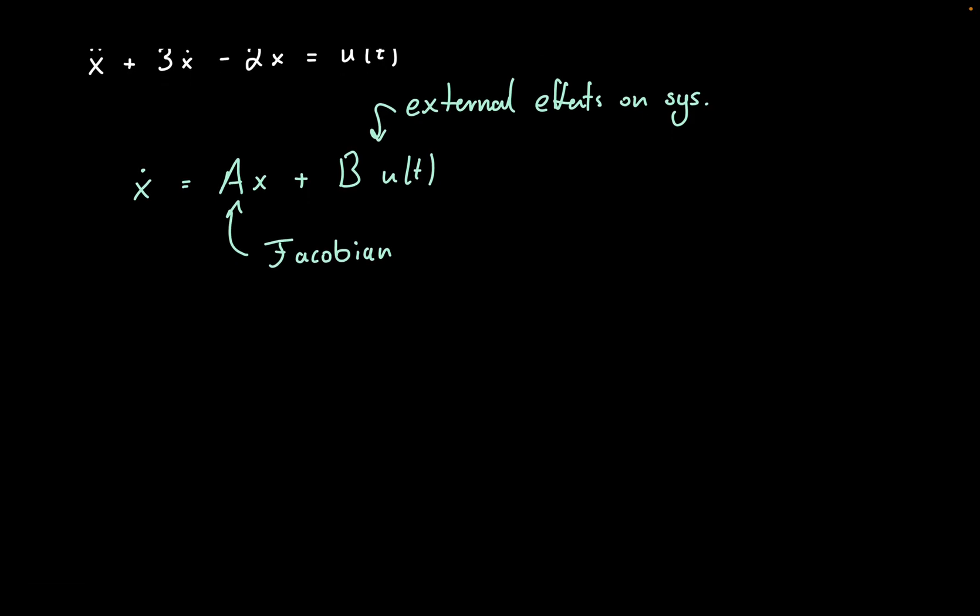So we can define those as, so if we say, let x1, x2, because we're going to have 2. And we can say x1 will be x, and x2 is going to be x dot.